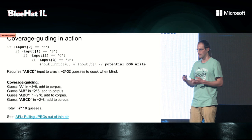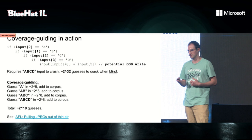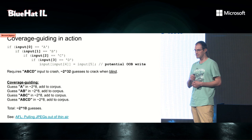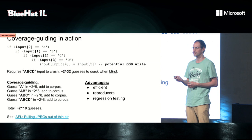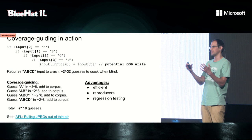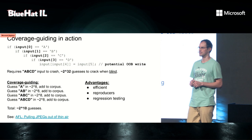There's a famous example for AFL where it generates a valid JPEG image out of nothing. The advantages of this approach are that it's efficient, it gives reproducers because those inputs are immediately reproducers if they trigger a crash, and it's great for regression testing because the corpus is a set of programs that gives maximum coverage.